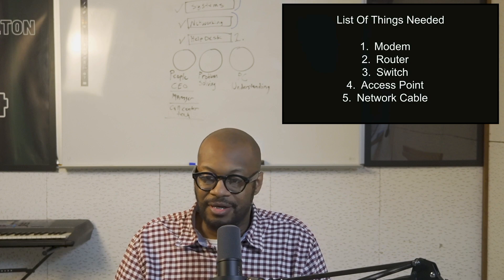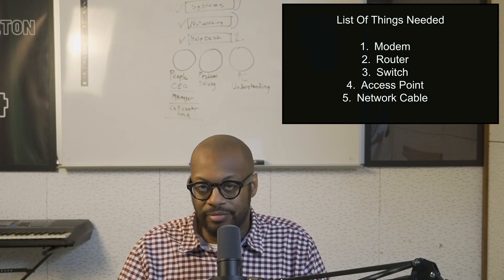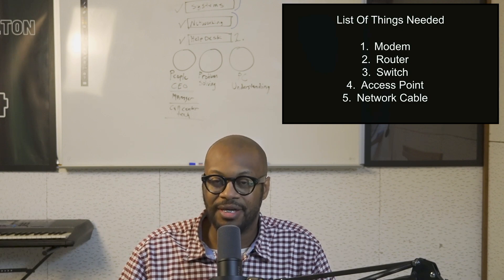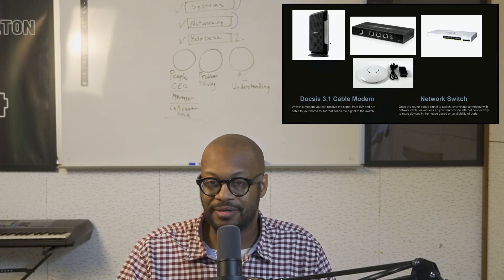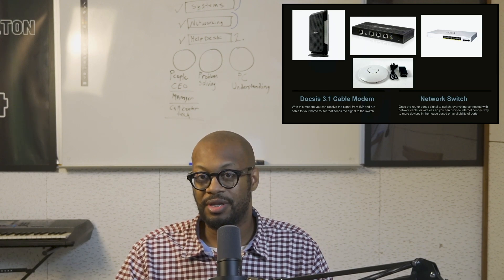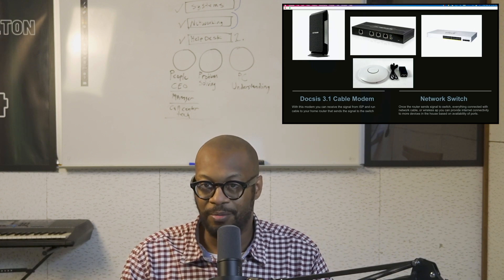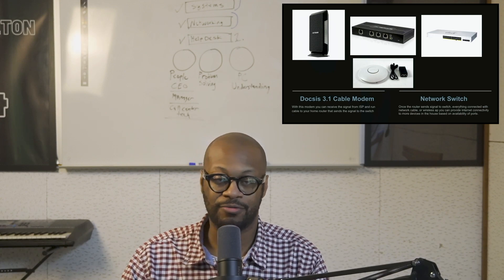Here's the list of things you need: your own modem — DOCSIS 3.0 or better; a router; a switch; an access point if you want Wi-Fi throughout your whole house depending on the size; and network cables depending on how many devices you have. Here I'm showing a DOCSIS modem, a Ubiquiti EdgeRouter for home use, a switch with plenty of ports, and a Ubiquiti access point at the bottom.